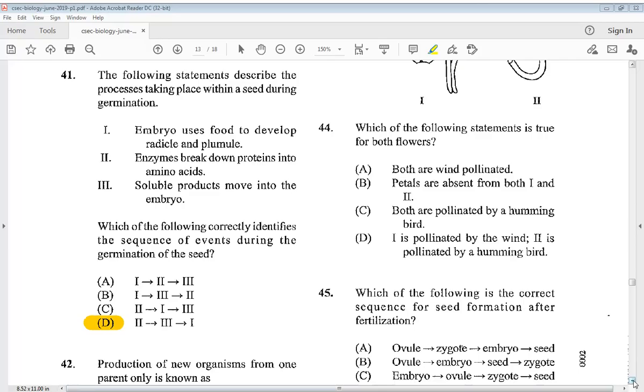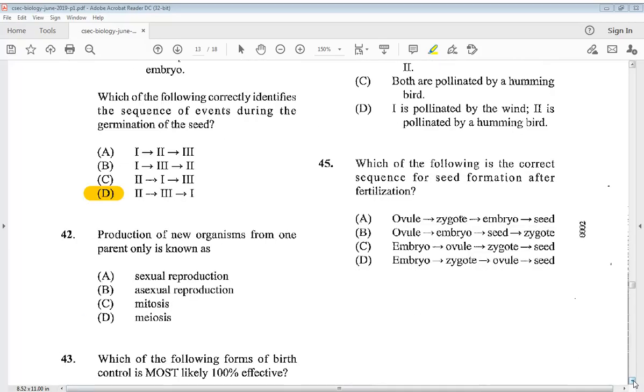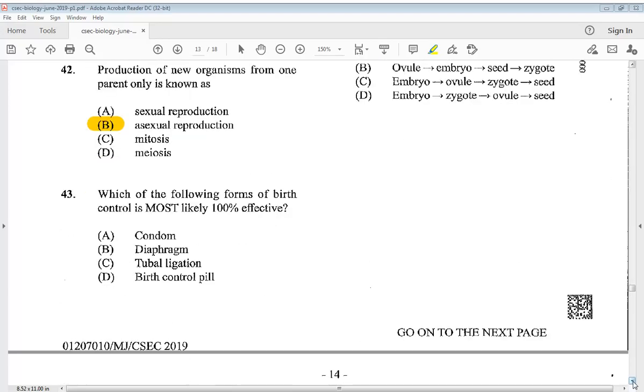Let's move on to number 42. Production of new organisms from one parent only is known as - we know that is known as B, asexual reproduction. Question 43: Which of the following forms of birth control is most likely 100% effective? A condom, B diaphragm, C tubal ligation, D birth control pill. So we know it is C, tubal ligation.